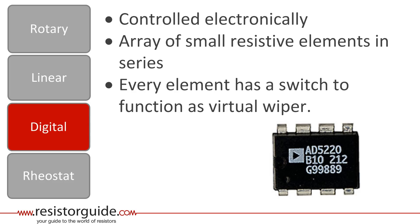The third category is the digital potentiometer. These are controlled electronically, and consist of an array of small resistive elements in series. Each of these elements has a switch. Therefore, you could say that these switches function as a virtual wiper.